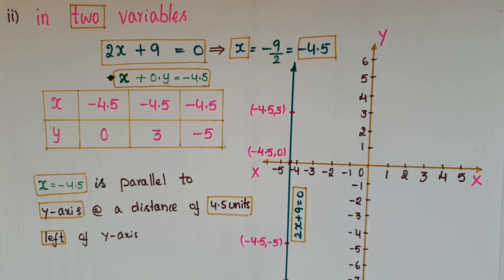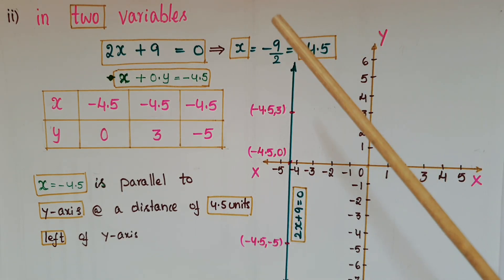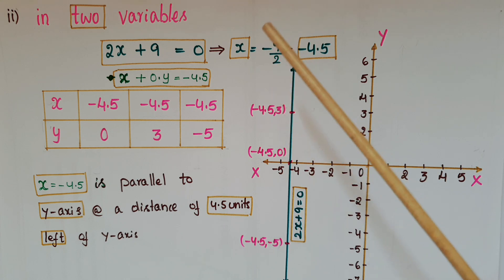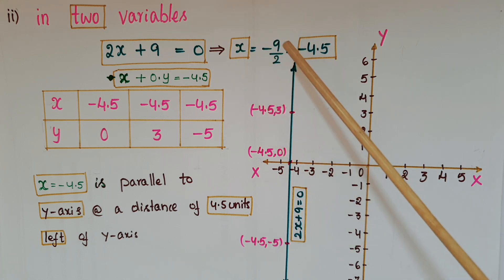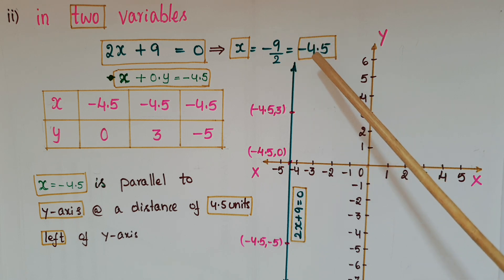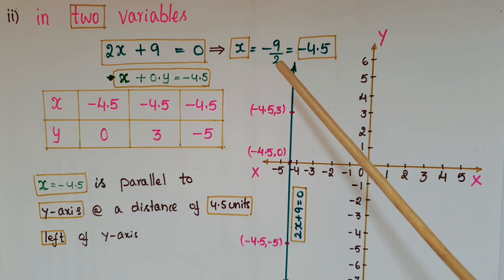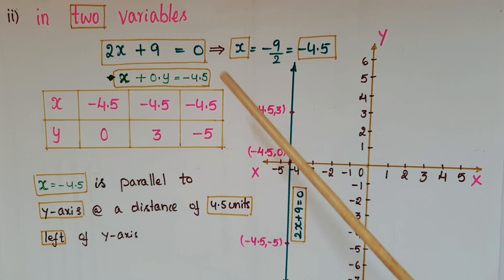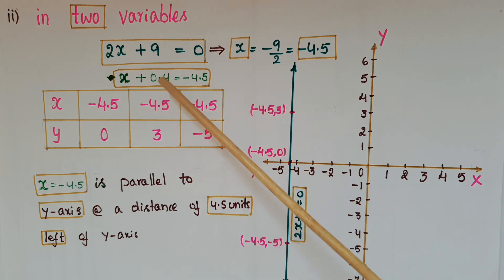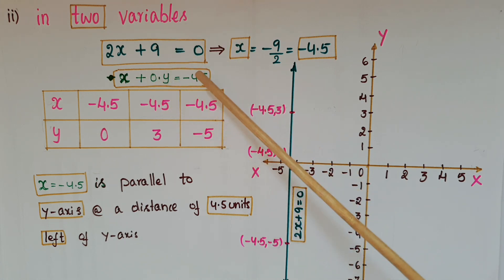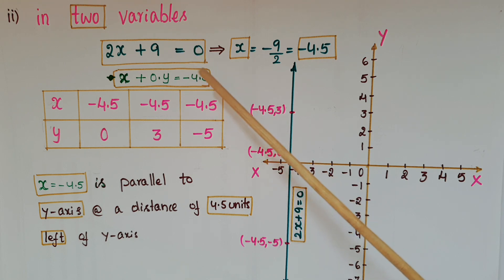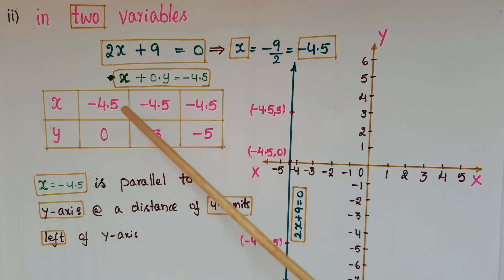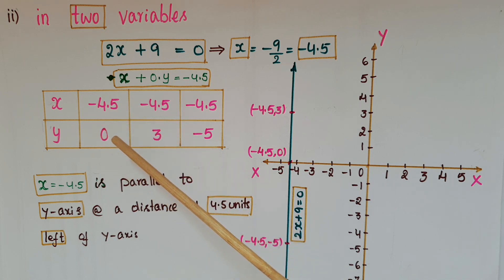Now I am going to show how to represent 2x plus 9 equals 0 in two variables. We write x equals minus 4.5, then express it in the form ax plus by plus c equals 0 — that is x plus 0 times y equals minus 4.5. Here the x-value is always minus 4.5 and the y-value can be any real number.